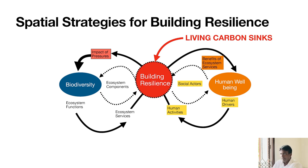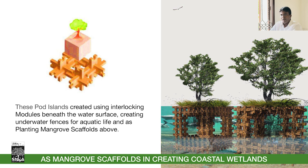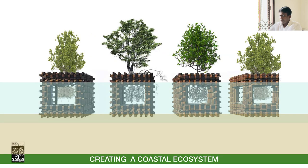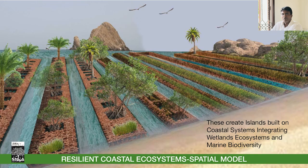How can we adapt this biodiversity and human well-being concept with a spatial strategy, and how can we bring about a living carbon scene at the intersection of these two entities? When we started exploring, we looked at how these systems we have developed can become angular scaffolds and coastal wetlands, and how these scalable entities can become coastal interfaces — initiating floating gardens and farming interfaces that facilitate a coastal ecosystem.